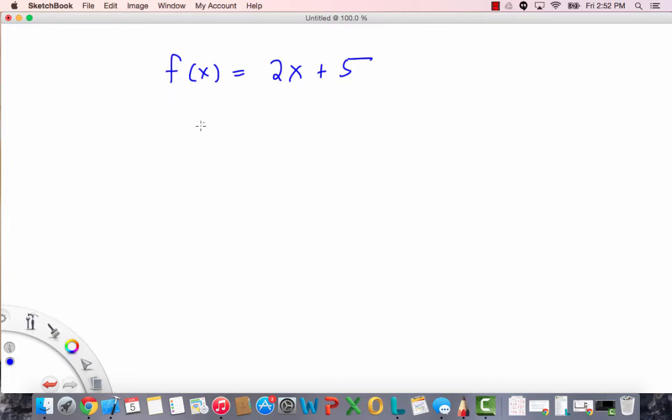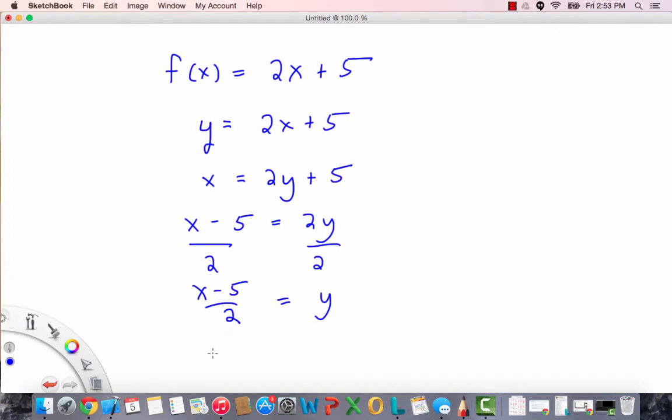Now there's a very simple procedure for finding the inverse function. What we do is we replace f of x with y and rewrite the function like this and then we swap x and y. Wherever there's a y we put an x wherever there's an x we put a y and then we solve for y. What does that mean? Solve for y. That means get y by itself. So we subtract 5 from both sides and now we have to divide both sides by 2 and you see that y equals x minus 5 over 2 and just reversing the order here and using the proper notation f inverse of x is x minus 5 over 2.